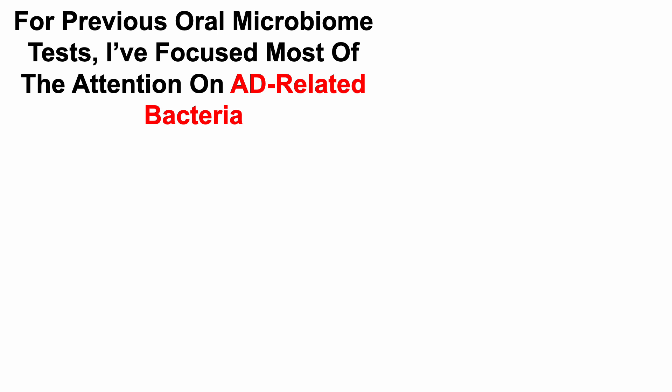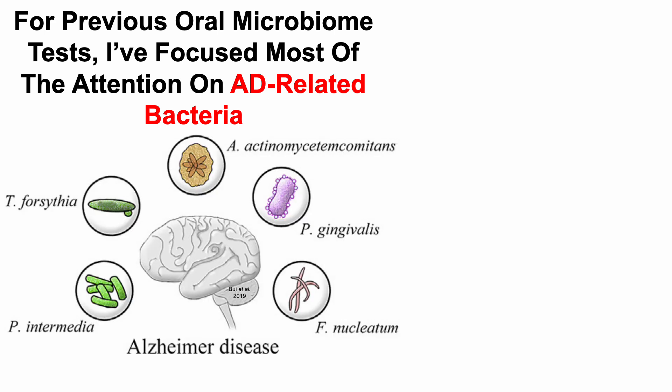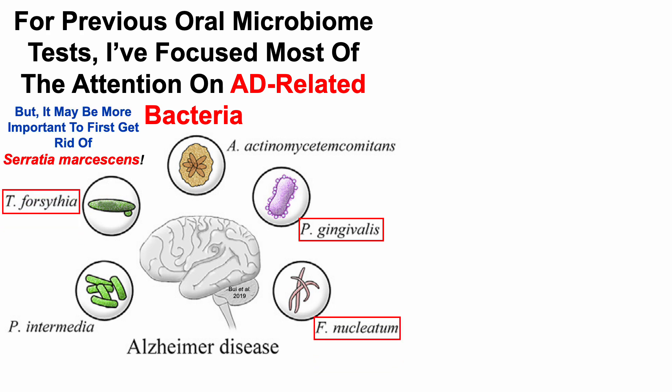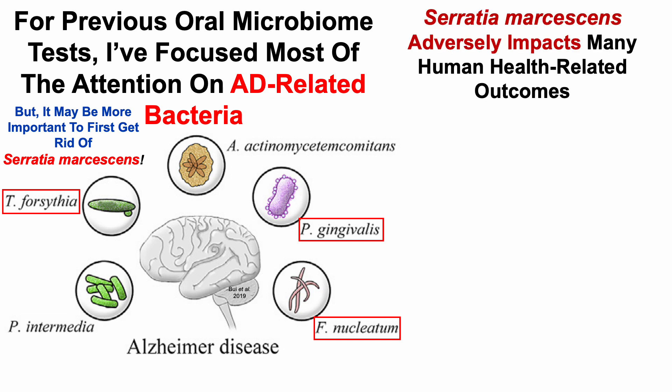For previous oral microbiome tests, I've focused most of the attention on Alzheimer's disease-related bacteria, a few of which are shown here, and they include P. gingivalis, F. nucleatum, and Tannerella forsythia. But it may be more important to first get rid of a different bacterium, which is known as Serratia marcescens, which I'll refer to as Serratia for short in this video going forward.